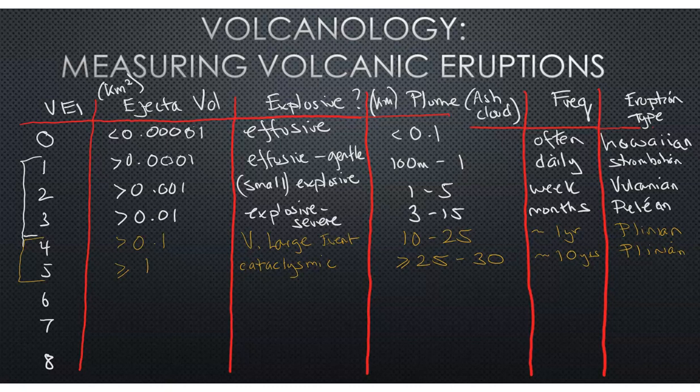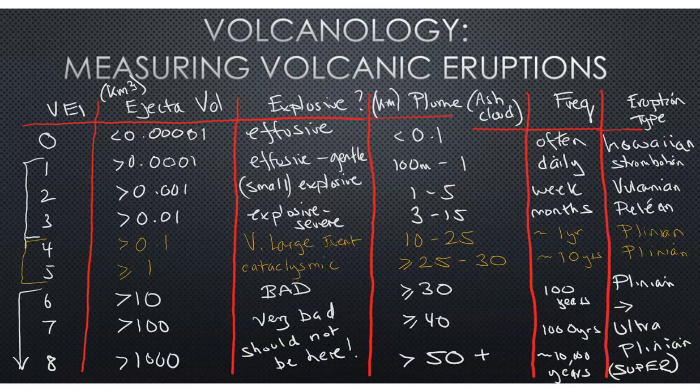Now we're into the VEI scale, looking at the very large, the big eruptions that are historic and have the potential to change or have changed the world and even human society throughout history. VEI-6, looking at over 10 cubic kilometers of material ejected from that volcano during the eruption, which is explosive, very bad, very large explosion, and you shouldn't be anywhere near it when it goes off. It's going to create a plume or ash cloud that's over 30 kilometers, that's around 20 miles in the air.